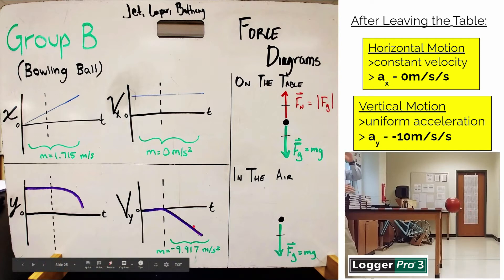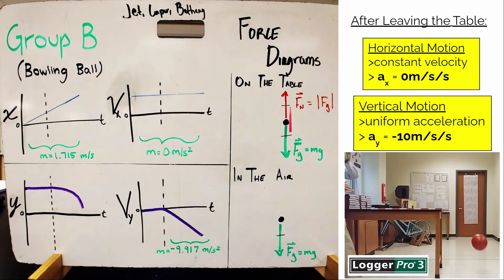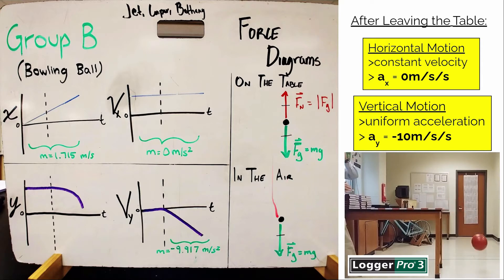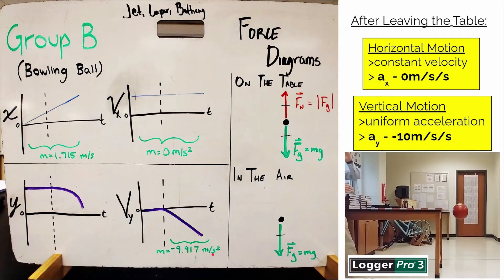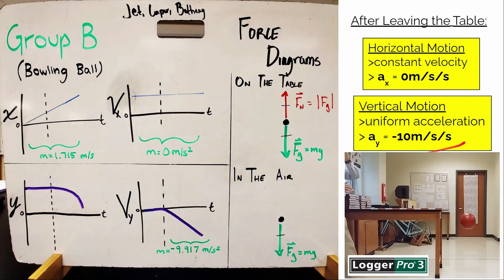Why was there zero acceleration in the y direction on the table and negative acceleration off the table? On the table, the sum of the forces in the y direction — gravity and the normal force — are balanced, so the sum of the forces is zero, and there would be no vertical acceleration. But as soon as the ball leaves the table, that normal force goes away, but the gravitational force does not. So the ball starts speeding up in the negative direction, and the acceleration is that of free fall: negative 9.8 meters per second each second. We'll approximate that to be negative 10 meters per second per second.